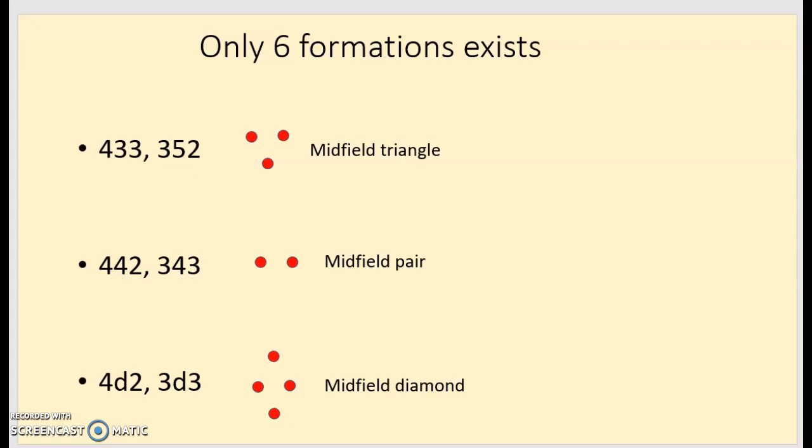So here they are: 4-3-3, 3-5-2, 4-4-2, 3-4-3, 4-diamond-2, and 3-diamond-3. And I broke them into three categories about what's going on in the middle. Either you've got three guys in some sort of a triangle, you've got two guys in a pair, or you've got four guys centrally in a diamond.